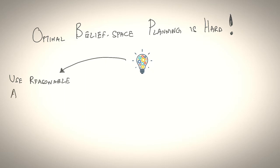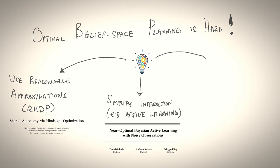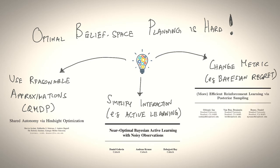Well, there are fundamentally three options that we can entertain. The first is to use reasonable approximations, for example, QMDP being one such approximation. And this wonderful paper by Jiftani et al. shows how this is useful in practice. A second approach is to simplify the interaction model between the robot and the human. For example, Bayesian Active Learning by Golovin et al. is a perfect such example that we'll talk about shortly. Finally, the third option is to change the metric from Bayes' optimality to something like Bayesian regret.